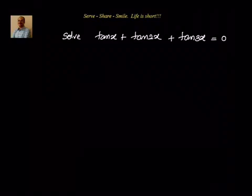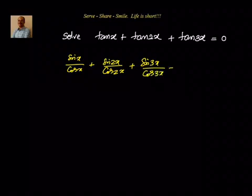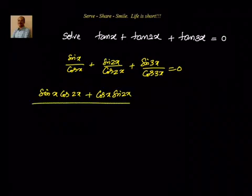So our approach to solve this problem is to convert this into sin and cos and see how we can simplify that. So we will write down sin x by cos x plus sin 2x by cos 2x plus sin 3x by cos 3x equal to 0. If I take the first two terms and try to take their LCM, I get sin x cos 2x, and remember x plus 2x is 3x. So when I take compound angles on the first and second terms, I should be able to get sin 3x common: sin x cos 2x plus cos x sin 2x divided by cos x cos 2x, plus sin 3x divided by cos 3x equal to 0.